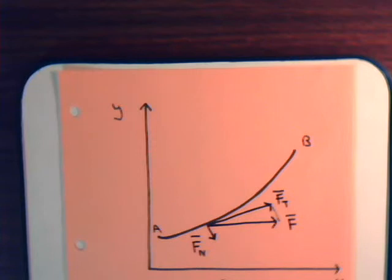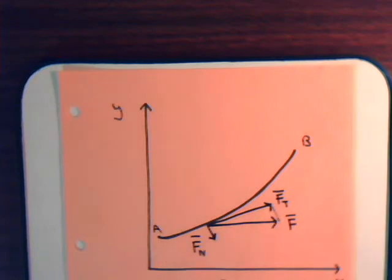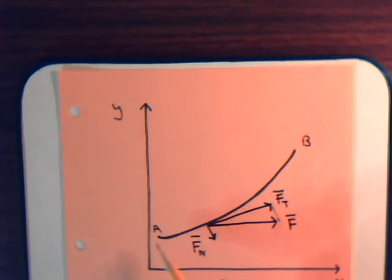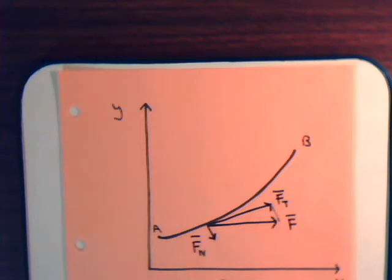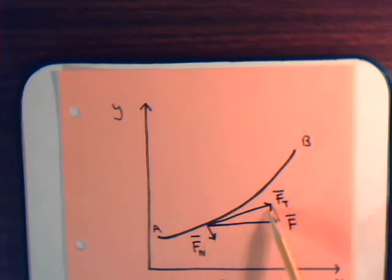As we explained in our introduction video on line integrals, suppose we have a curve AB just in the XY plane, and in this plane there is a force field. We are moving a particle from A to B, so that at each point on this curve, there is a force vector associated with it. That force vector has a certain magnitude and a certain direction. Here we are at one point on the curve, and here's the force vector. This can be resolved into a normal component and a tangential component.